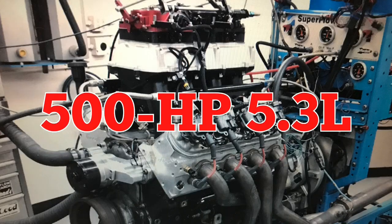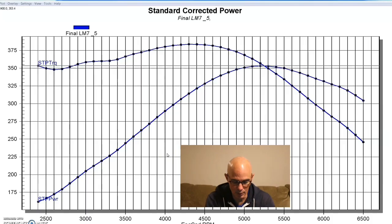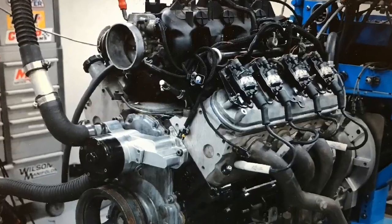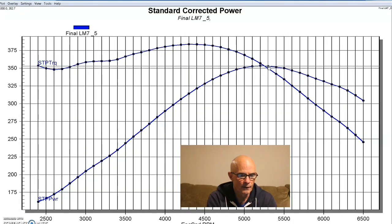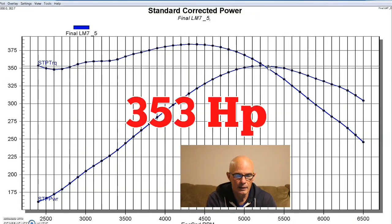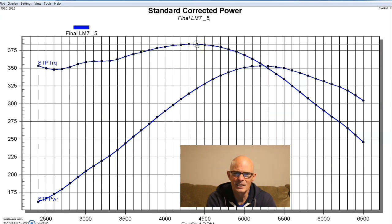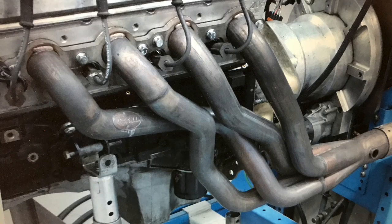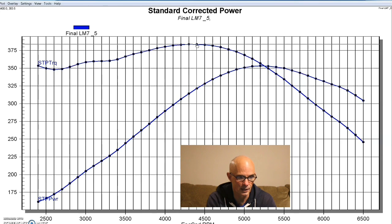We're going to take a look at our 500 horsepower 5.3 liter combination. This is our stock motor, just like a typical junkyard deal. 353 horsepower and 384 foot-pounds of torque. Kind of typical of what these things do with headers and the Holley management system, just the way that we get them from the junkyard. So here's what happened after we modified this thing.